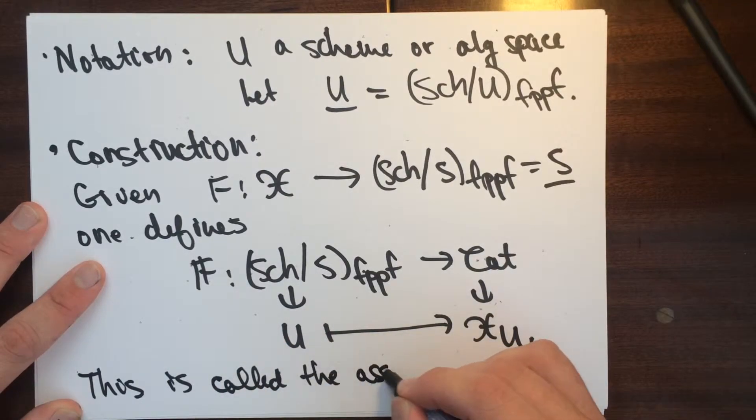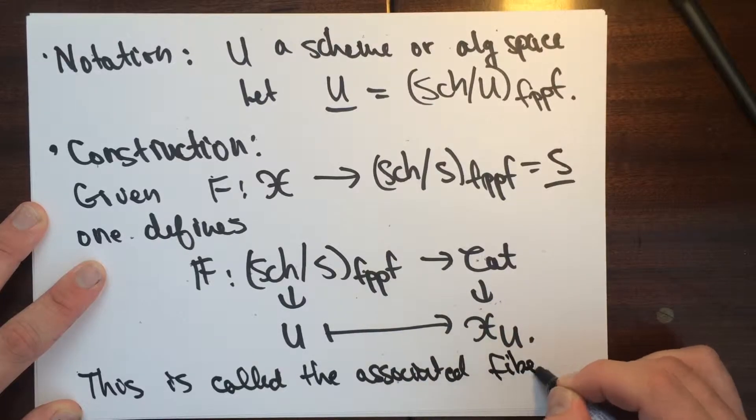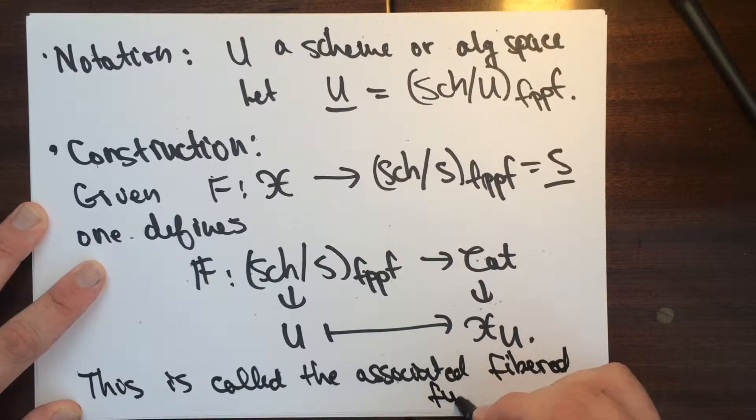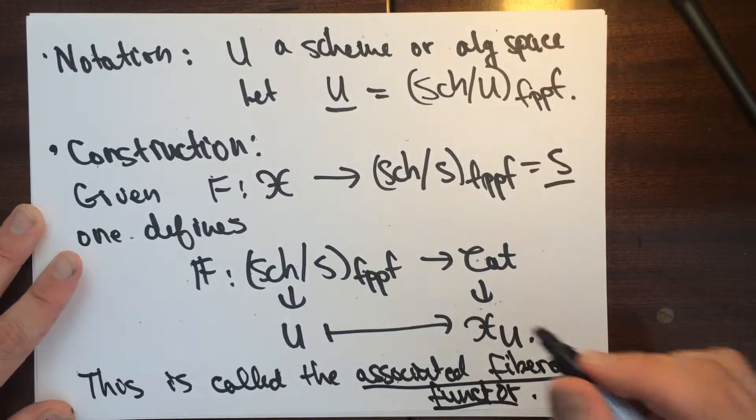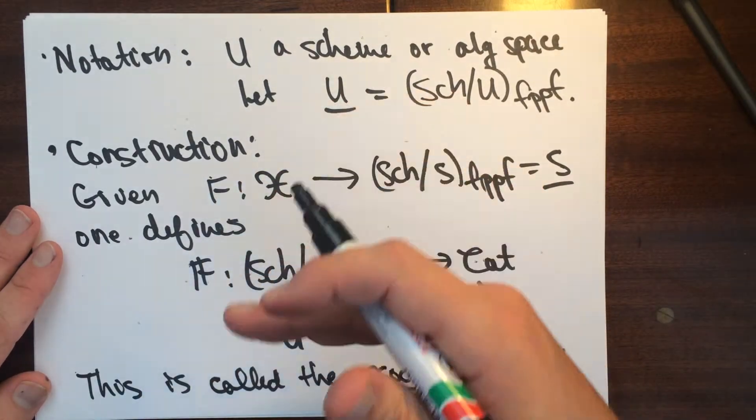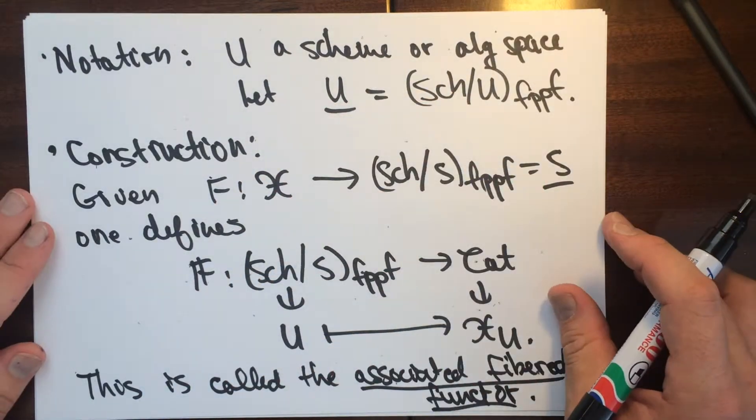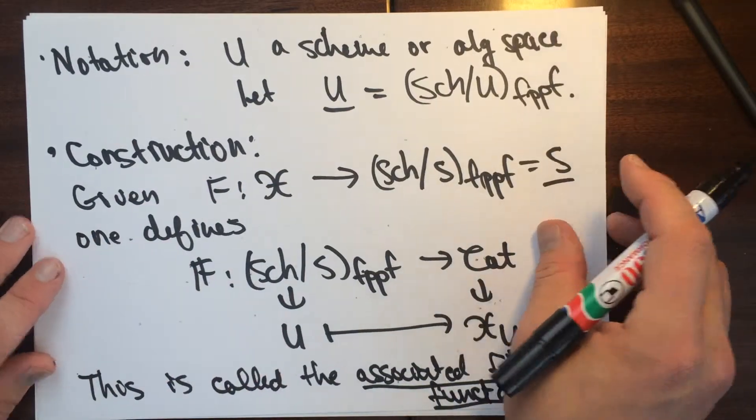And so this is what this is what we call the associated, this is called the associated fibered functor. So I mean if we just took one off the street, like a random functor off the street, it's not clear that this will be a fibered functor, but in the things that we're going to do, we're going to call it an associated fibered functor, so we're only going to consider things where this thing will be a fibered functor.